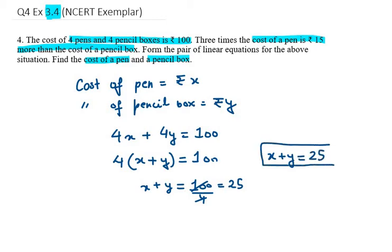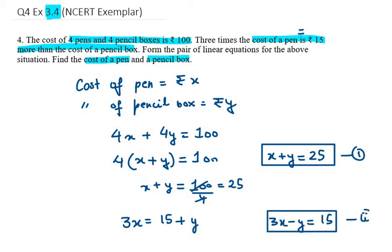It's okay to use 4x + 4y = 100, but I have minimized so I can get the answer quickly. In the second equation it says three times the cost of a pen, that means 3x, is equal to 15 more than the cost of a pencil box. More than is replaced by plus, then the cost of pencil box is y. Now I will rearrange this equation and get 3x minus y equals 15. This is my second equation.